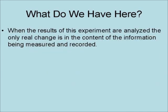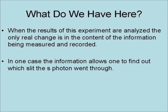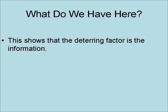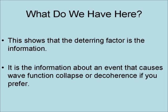When the results of this experiment are analyzed, the only real change is in the content of the information being measured and recorded. In one case, the information allows one to determine which slit the S photon went through; in the other case, it does not. This shows that the determining factor is the information itself — it is the information about an event that causes wave function collapse, or decoherence.